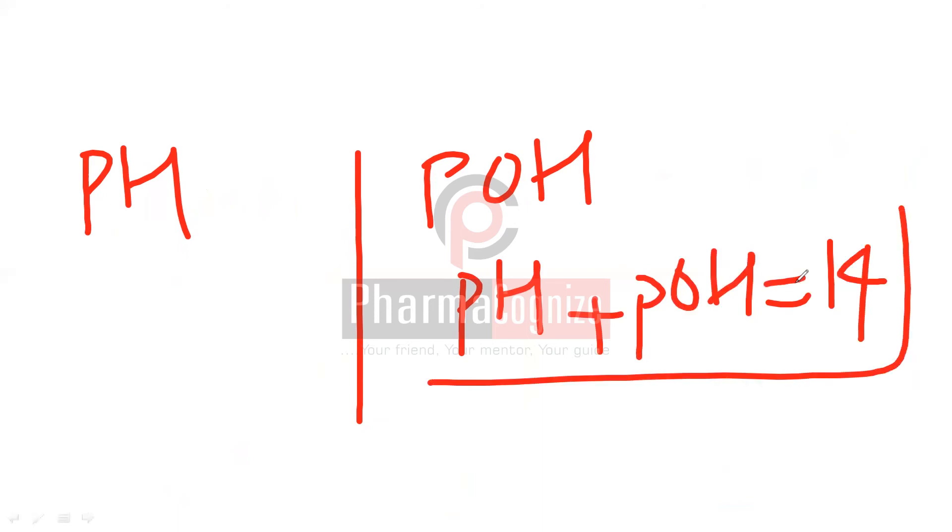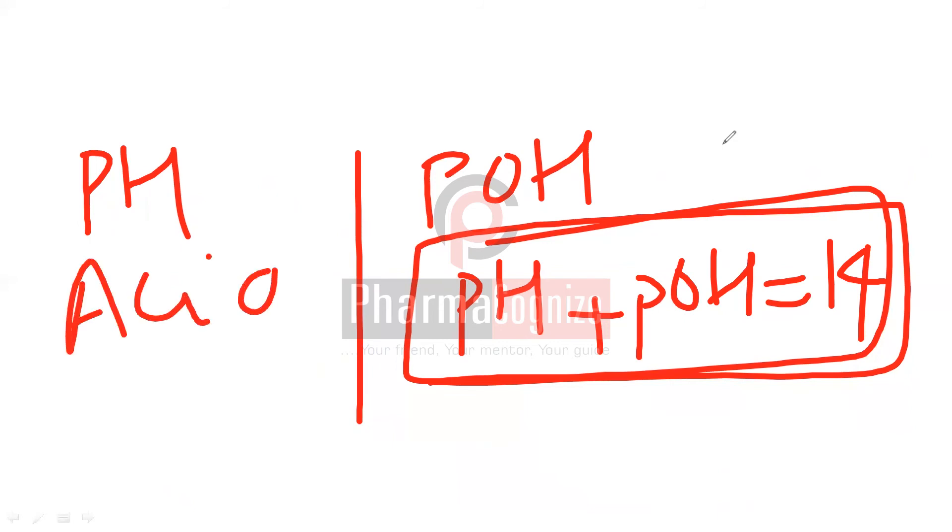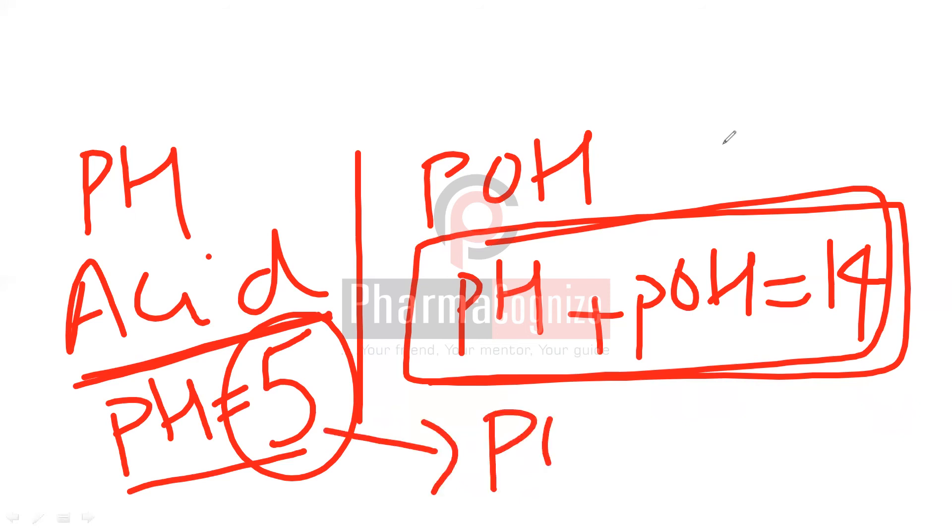Finally, we have to learn the relationship between pH and pOH. pH plus pOH is equal to 14. This is the relationship between pH and pOH. Now if I ask someone in a question, I have an acid with pH of 5. If it is very low pH, meaning it is less than around 1 or 2, then we have a strong acid. But now pH is 5, that means it is weak acid. In this case, pOH is 14 minus 5 which equals 9.